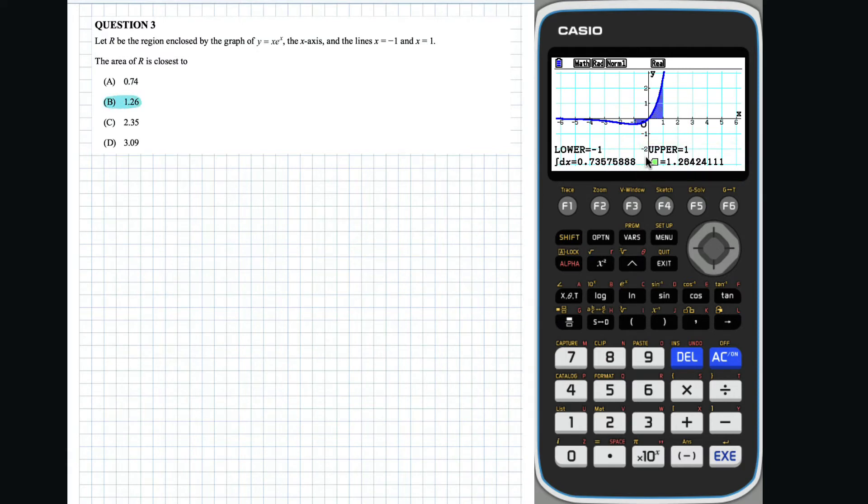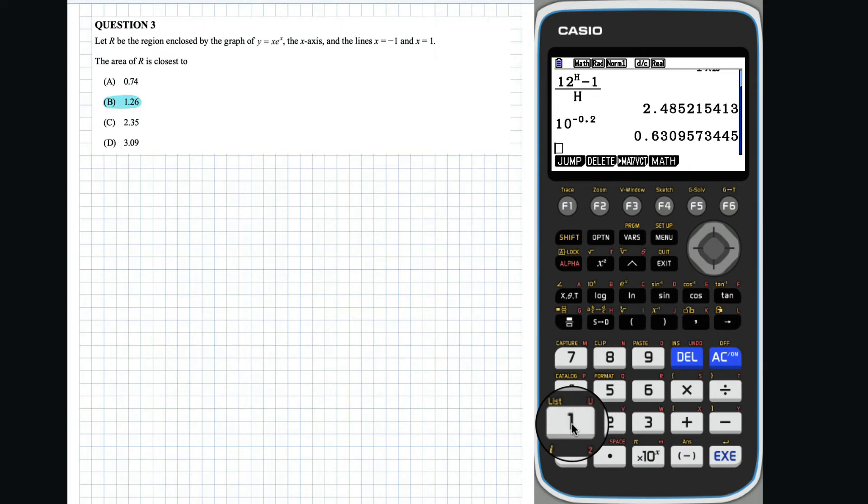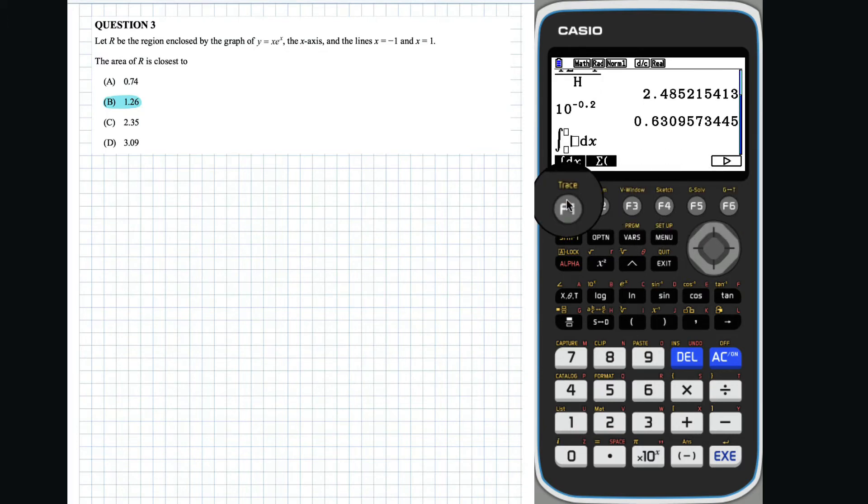Alternatively, one could calculate the area without the graph using the run menu. We can use the idea of an absolute value of a function. The absolute value can be found under option and numeric.